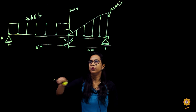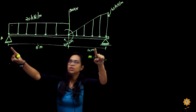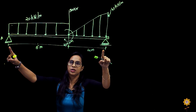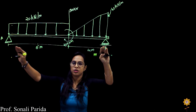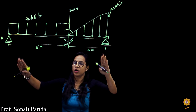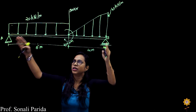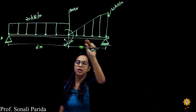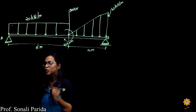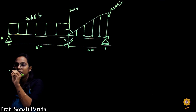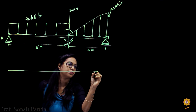This is the given question. We have to find the support reactions for this beam. These two are the supports and the beam is placed on them. Whatever reactions the supports give back to the beam, we have to find that. Before we move on to solving, we will first draw the free body diagram.